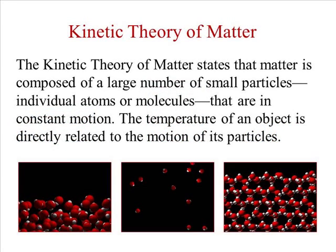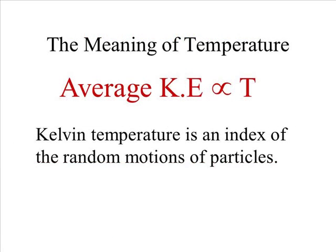Kinetic theory of matter states that matter is composed of a large number of small particles, individual atoms, or molecules that are in constant motion. And the temperature is directly related to this motion of the particles. Average kinetic energy is then proportional to temperature, and this would be the Kelvin temperature, that is an index of the random motion of particles.